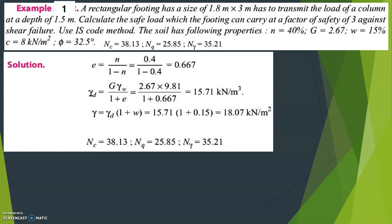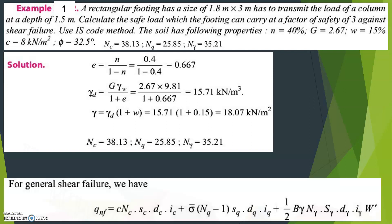Now we know gamma. We can start calculating the ultimate bearing capacity. Here, it is not specified as local shear failure, so we always consider general shear failure. If local shear failure is specified, you would use modified Nc, Nq, and N-gamma values. For general shear failure, what IS code says for ultimate bearing capacity is as follows.